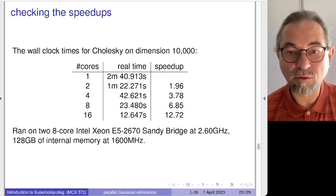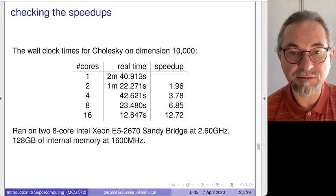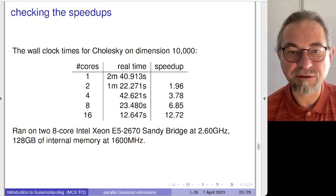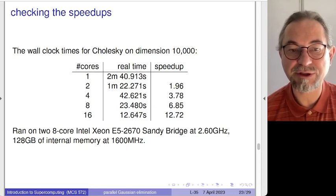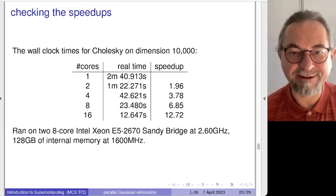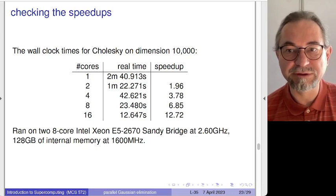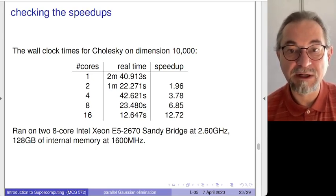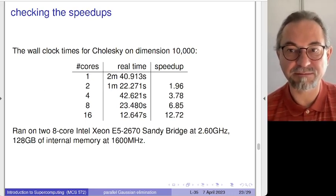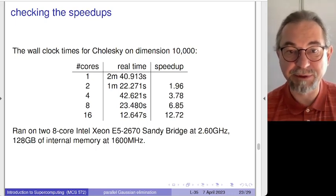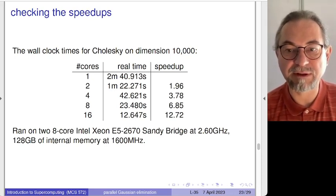Here are the wall clock times for dimension 10,000: with 2 cores, 4 cores, 8 cores, and 16 cores. This is a computer still up and running, bought in 2014, using fairly original versions of PLASMA. Again a great result — you see excellent speedups with standard software on basic problems like Cholesky factorizations, which are typically one of the basic building blocks in applications.